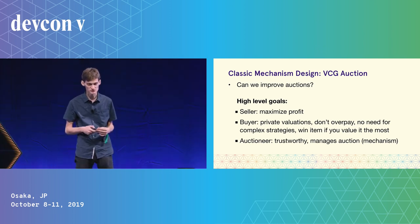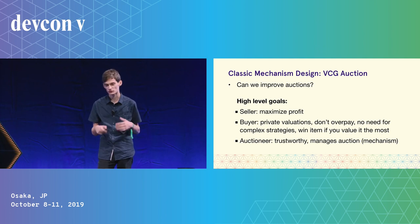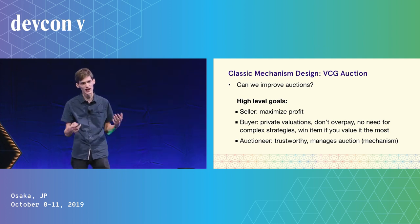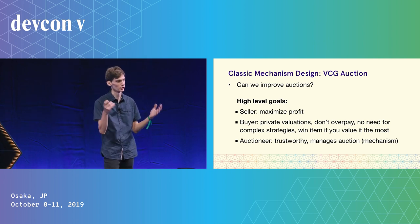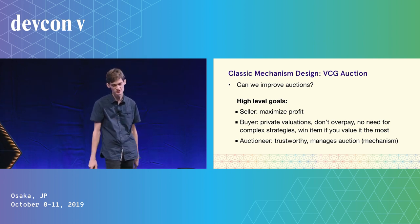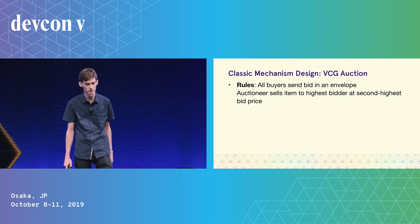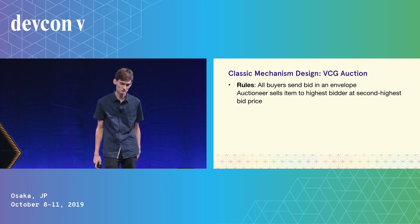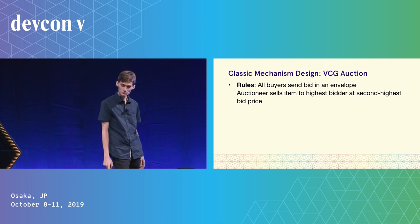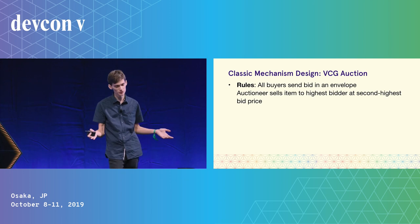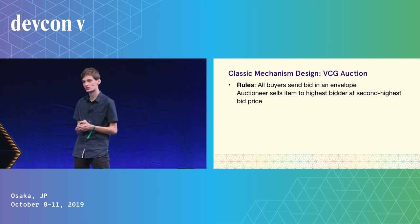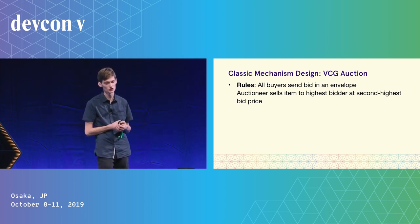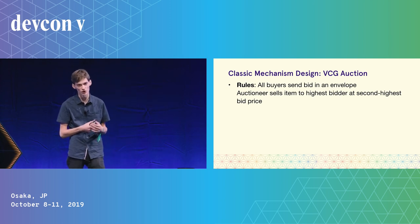We also assume the existence of a trustworthy auctioneer — a trusted third party that runs the mechanism. This is a classic assumption in mechanism design: a third party that everyone trusts is actually running the game. So can we improve the eBay auction? One classic proposal from mechanism designers is the VCG auction, or Vickrey-Clarke-Groves auction.